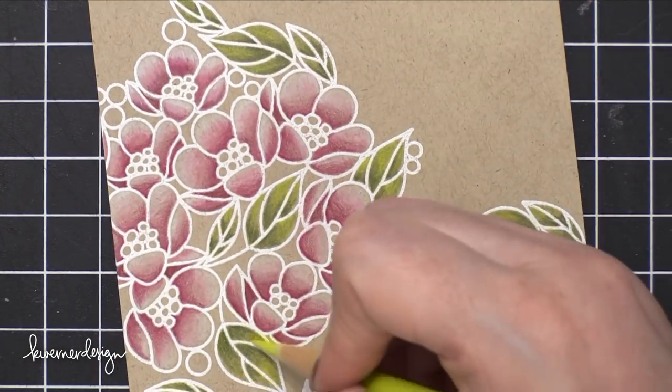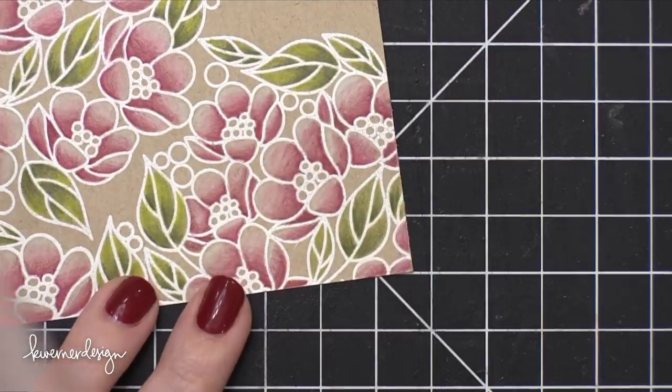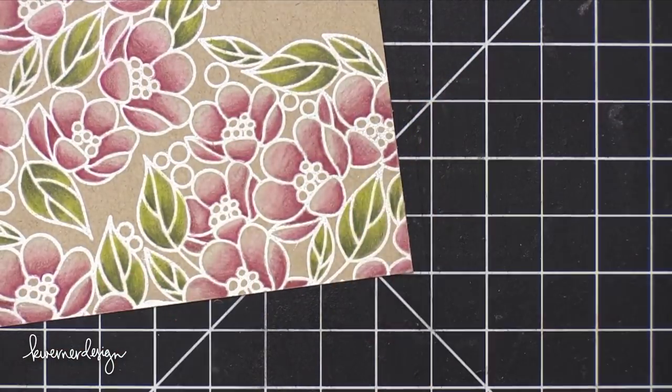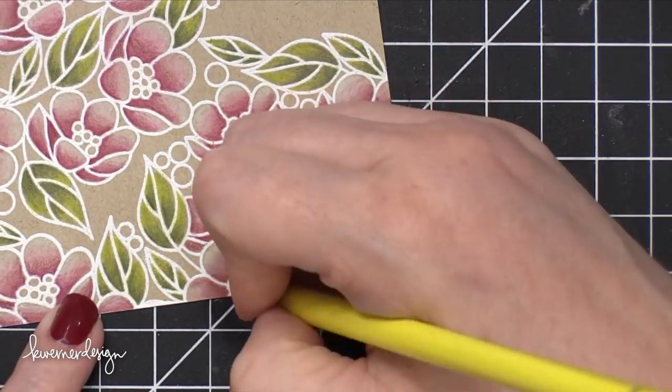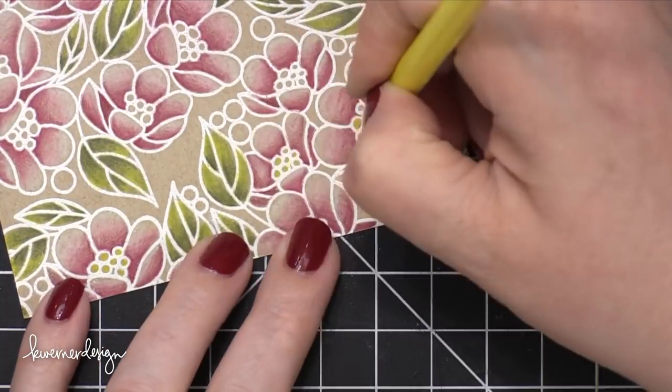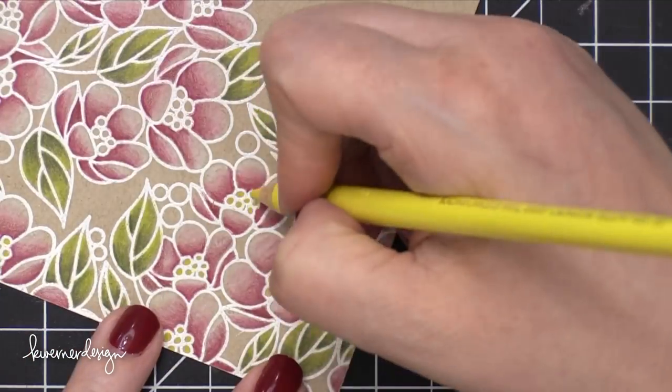I went ahead and I colored all of the leaves on this entire background, making sure to have the last step be that lighter green. And then I added yellow to the centers of the flowers.